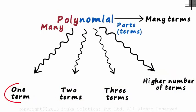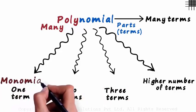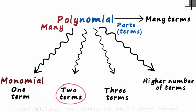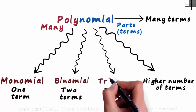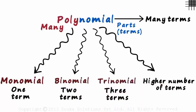Expressions with just one term, two terms, or three terms are given special names. An expression with one term is called monomial. An expression with two terms is called a binomial. And an expression that has three terms is called a trinomial. Mono is one, bi is two, and tri is three.